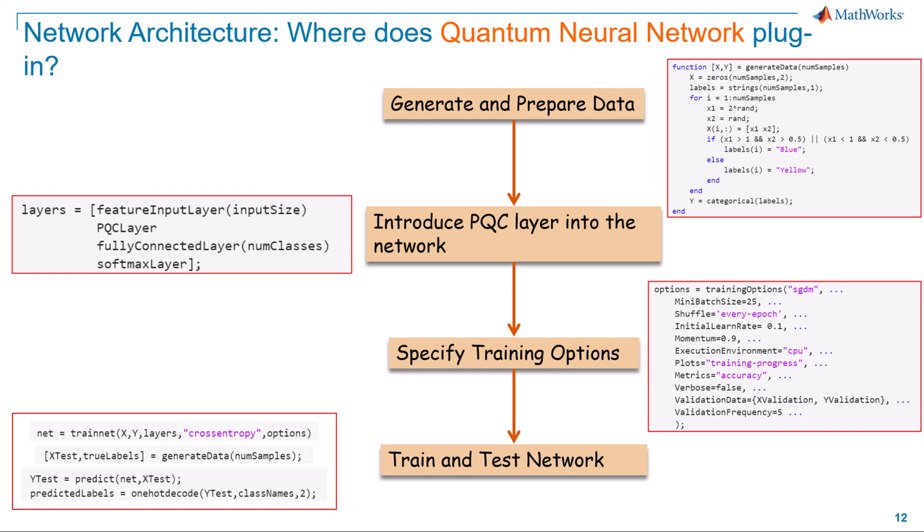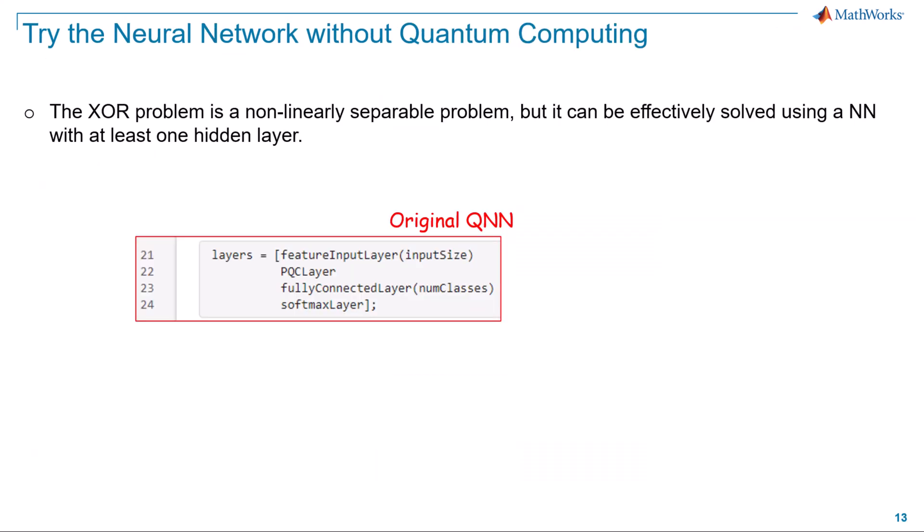The key difference in this setup is the inclusion of the parameterized quantum circuit layer. This PQC layer is what transforms your classical neural network into a quantum neural network, leveraging the principles of quantum mechanics to enhance computational efficiency and performance.